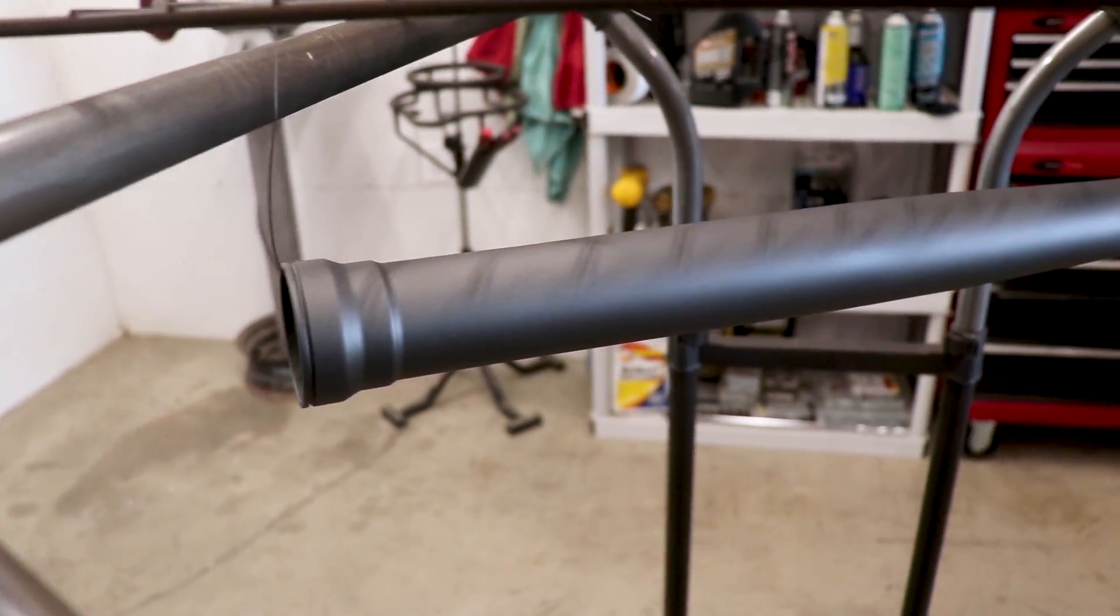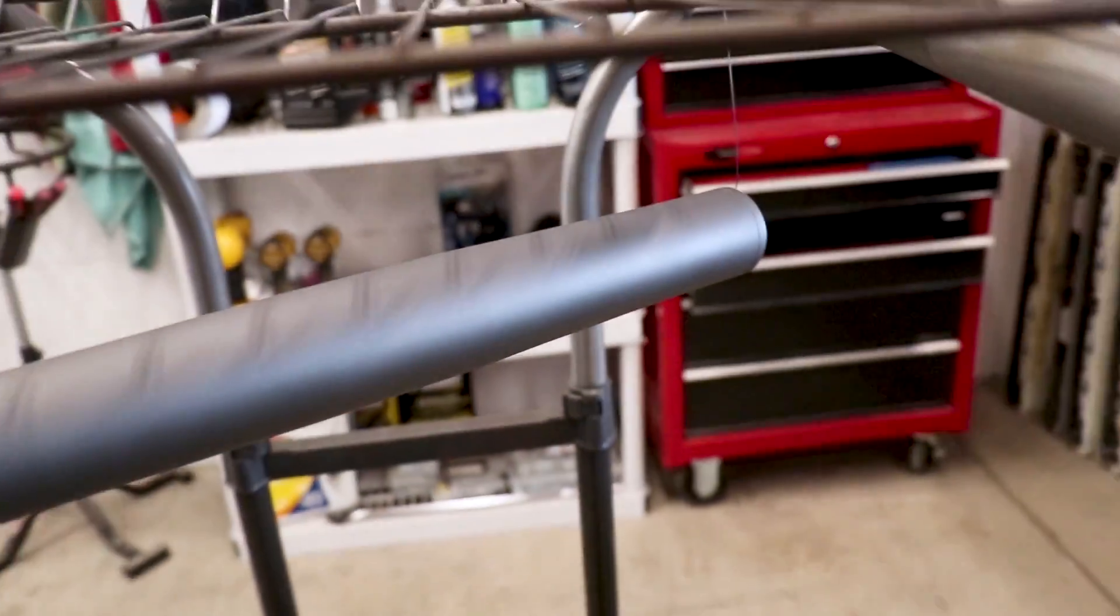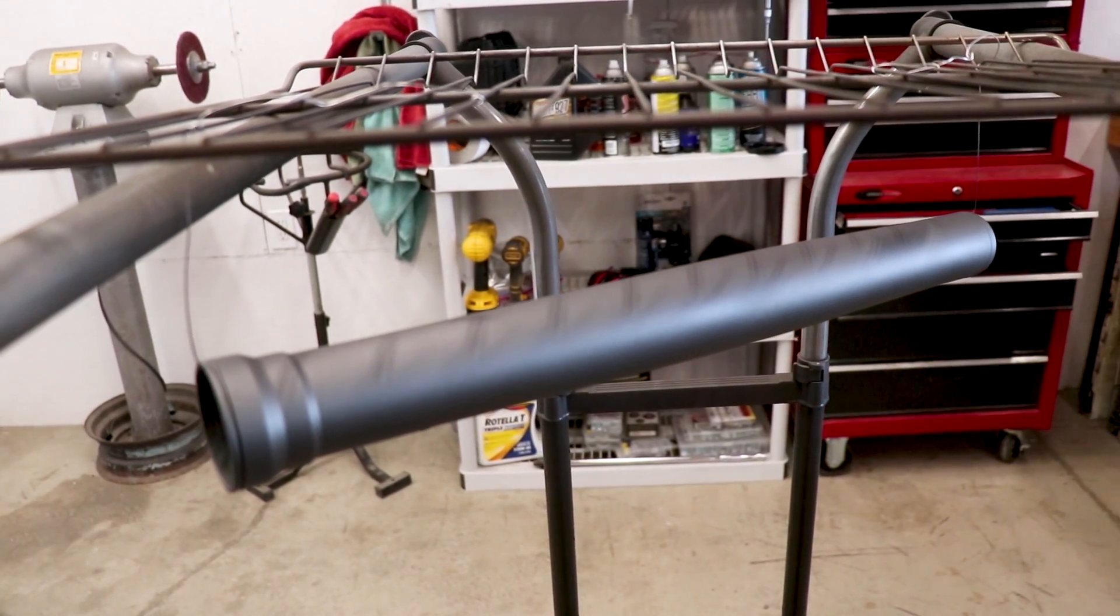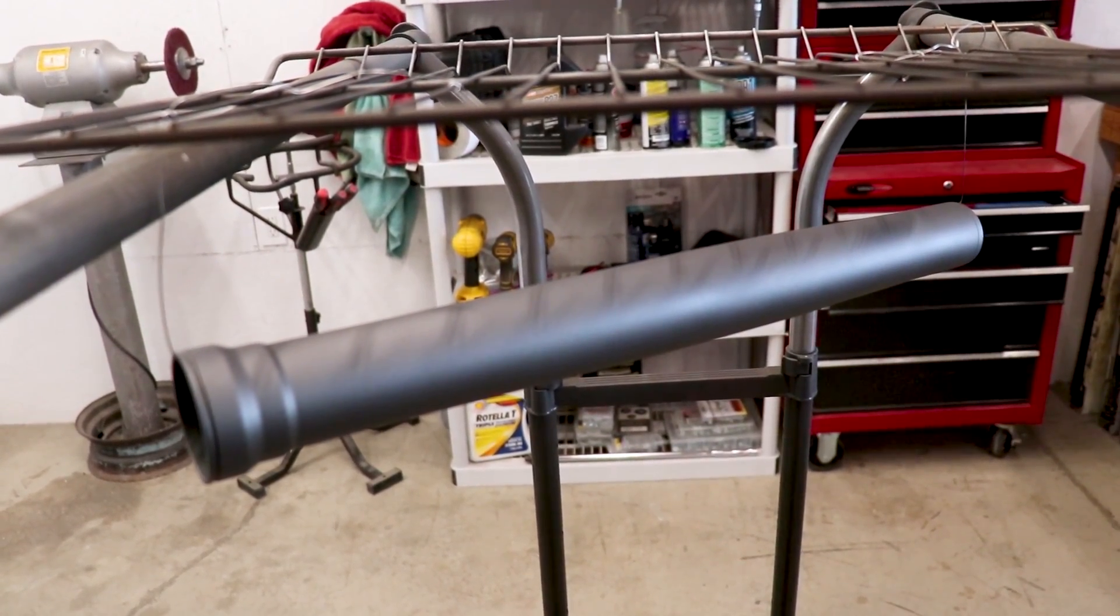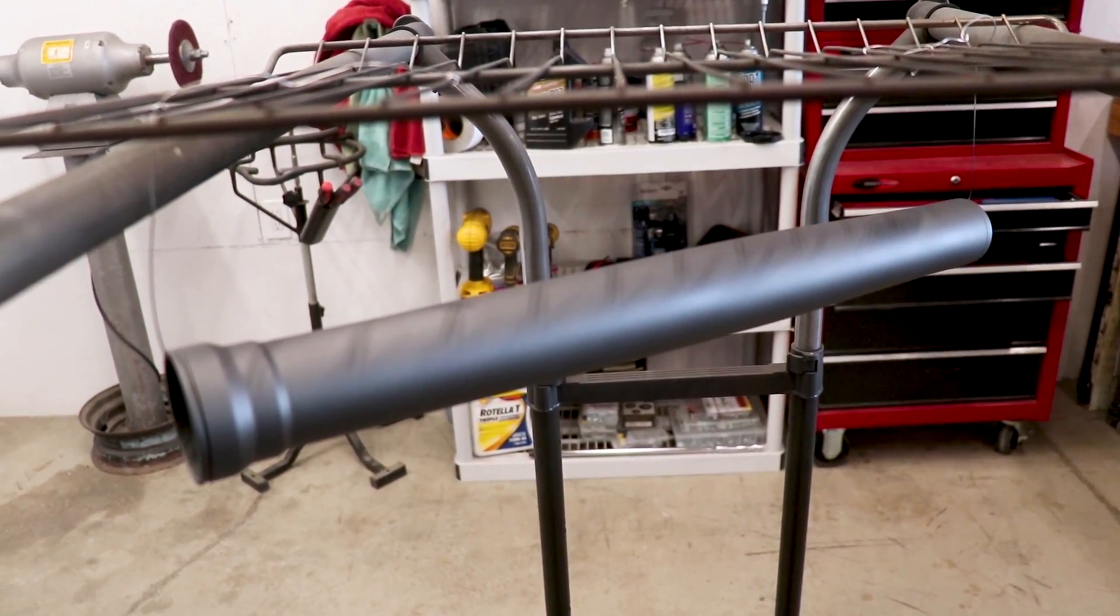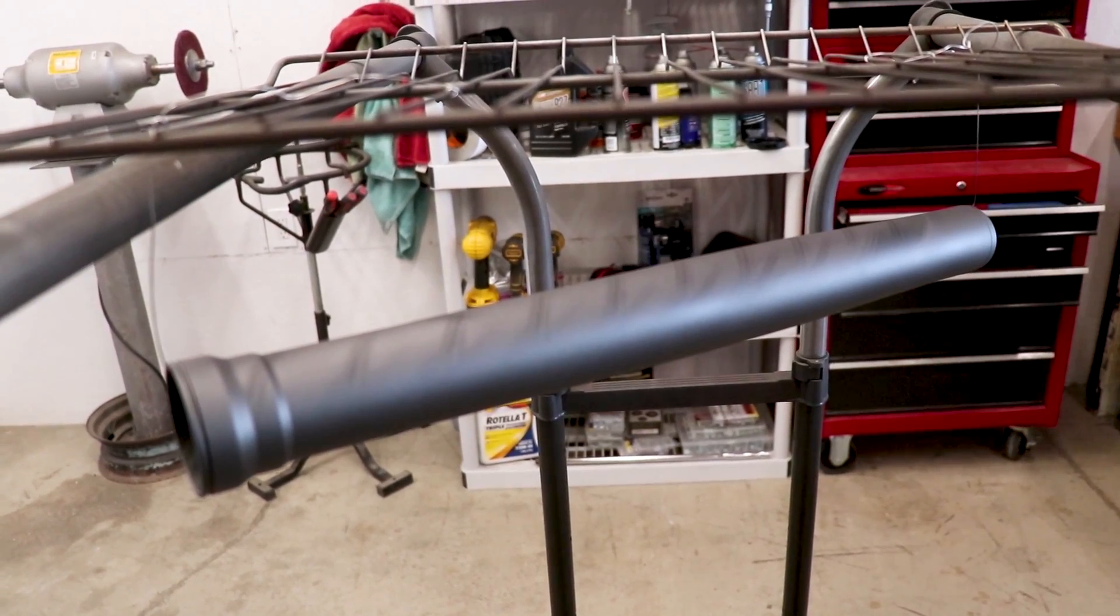The tube sprayed out pretty good. Looks nice and consistent. So I waited about 15 minutes for that Cerakote to tack up, and now we're ready to drop it in the oven for a full hour at 300 degrees to cure it.